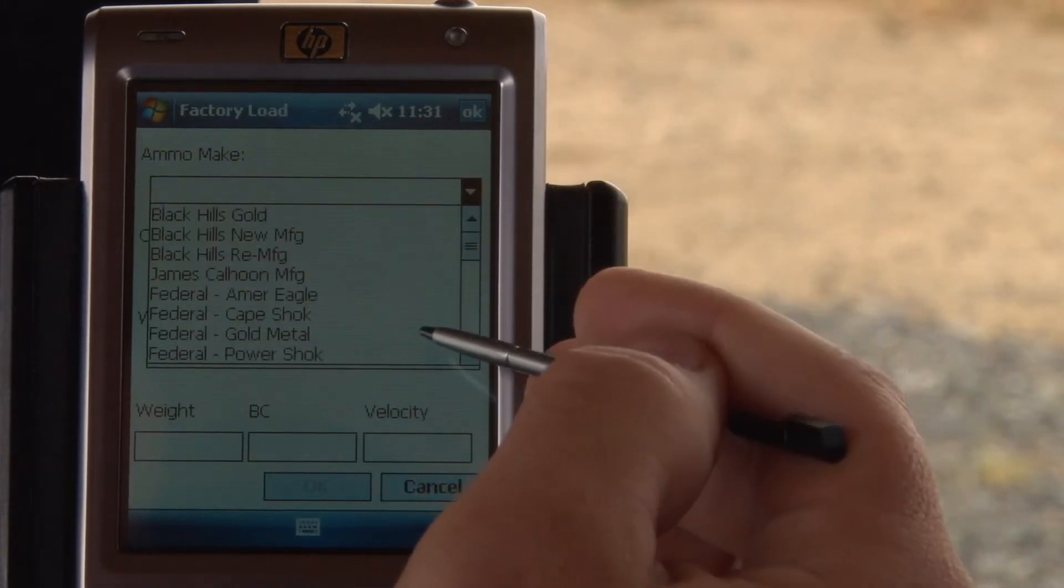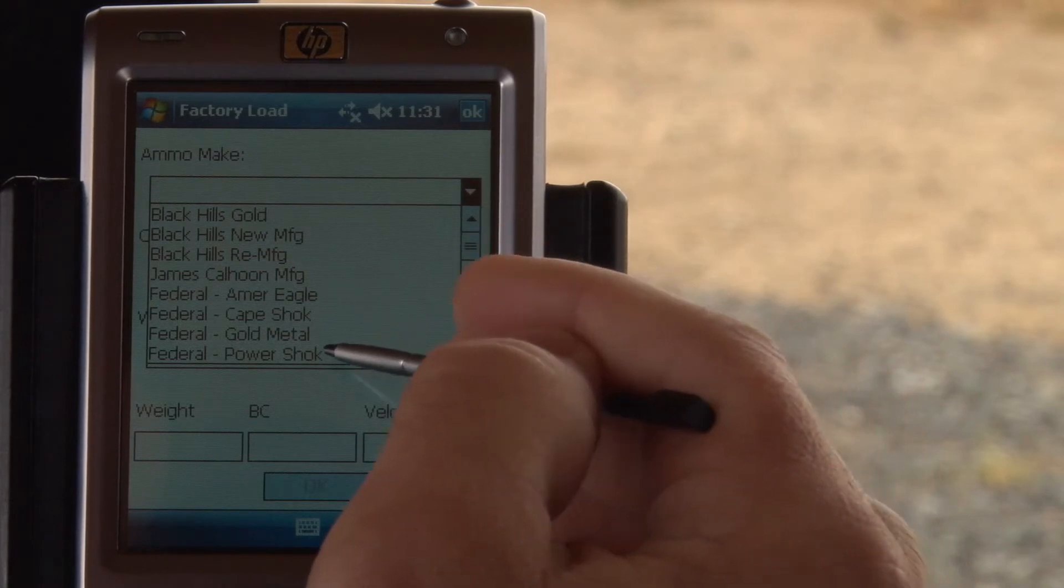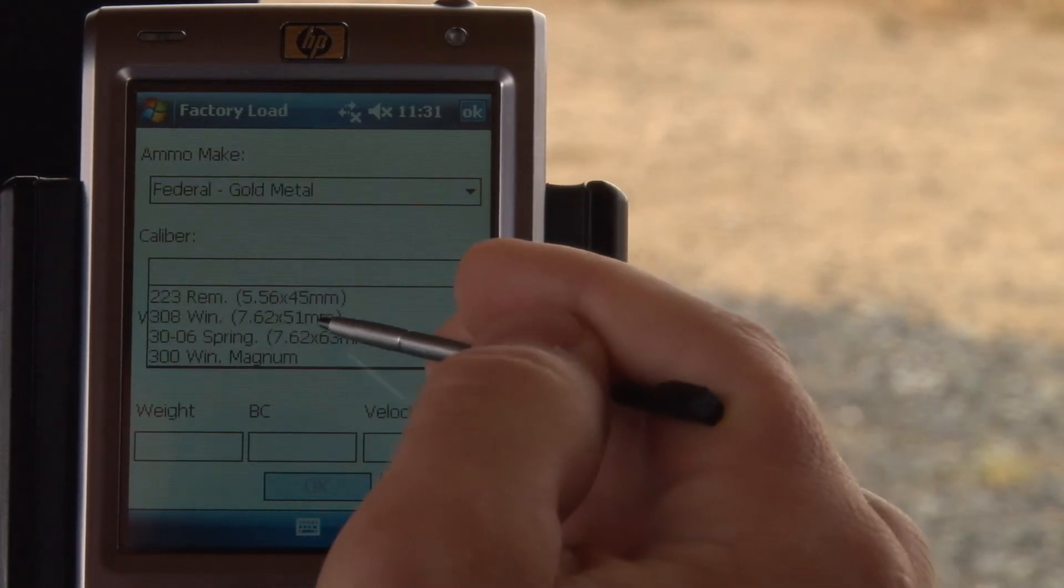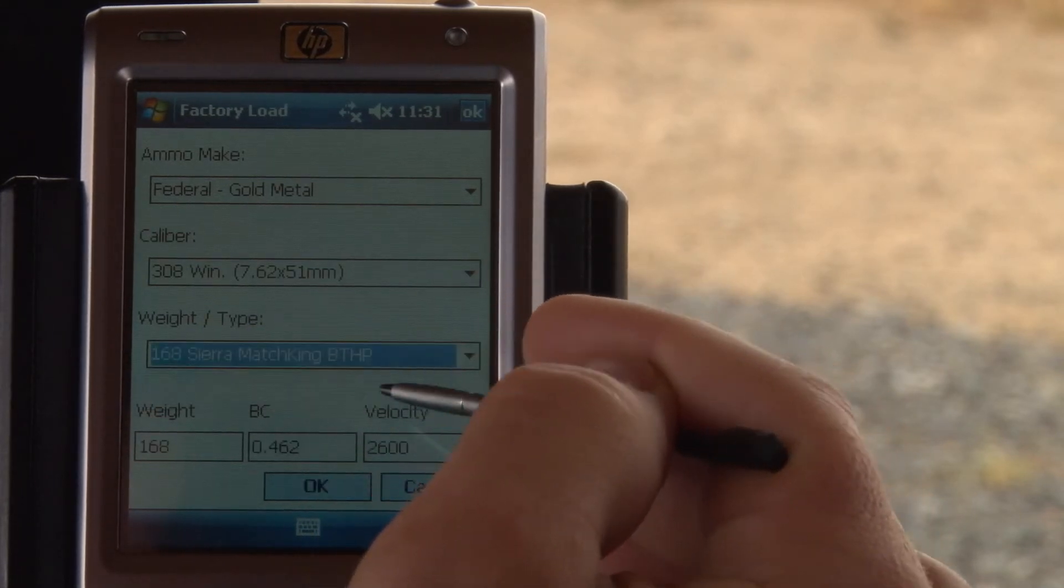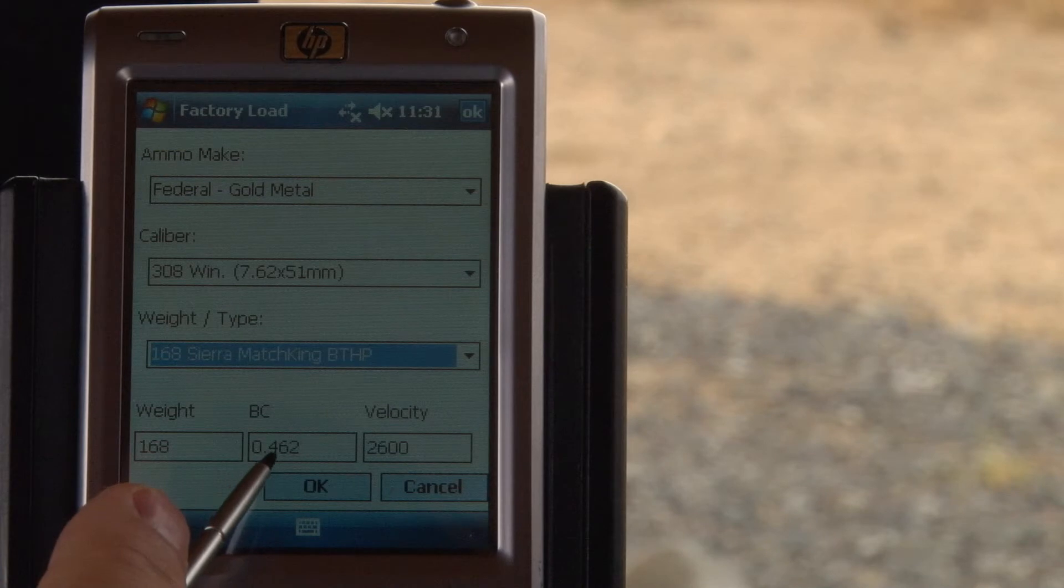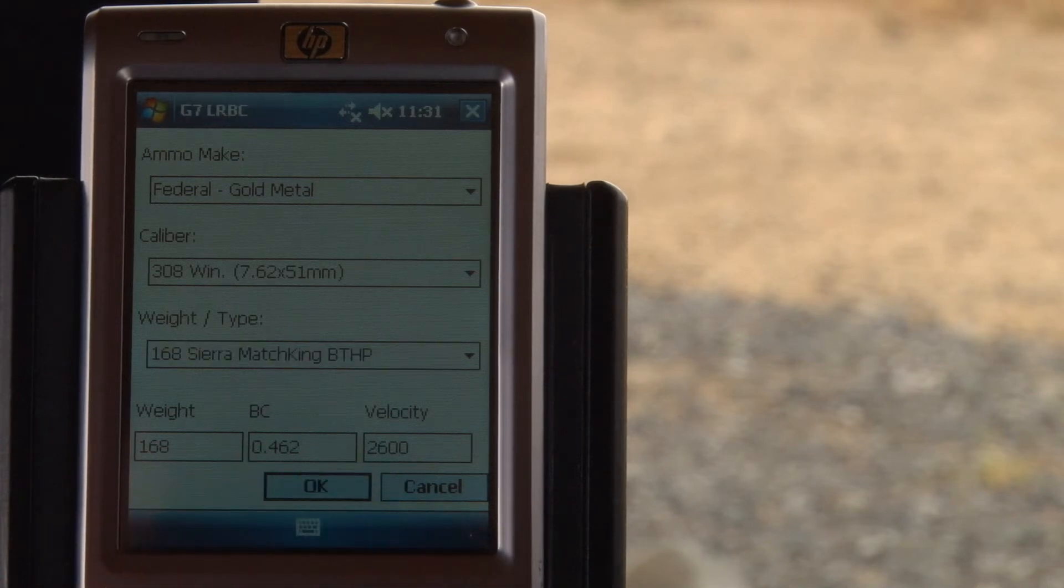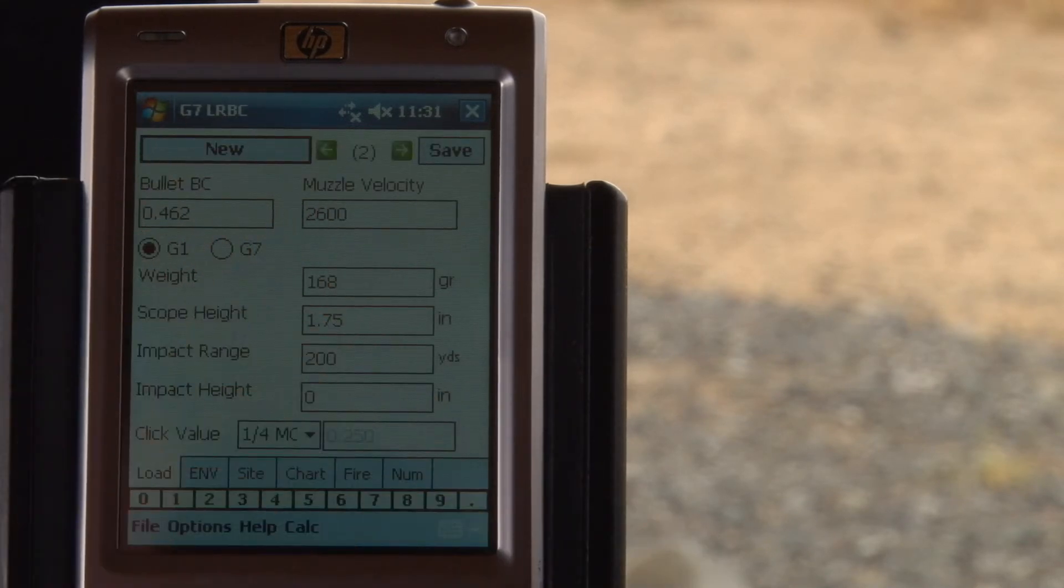Let's say we've got a Hornaday or here's a Federal Gold Medal. We're going to do the 308 and we have the 168 Sierra Match King. So we're looking at a BC of 462 and a Velocity of 2600. And that will populate those items.